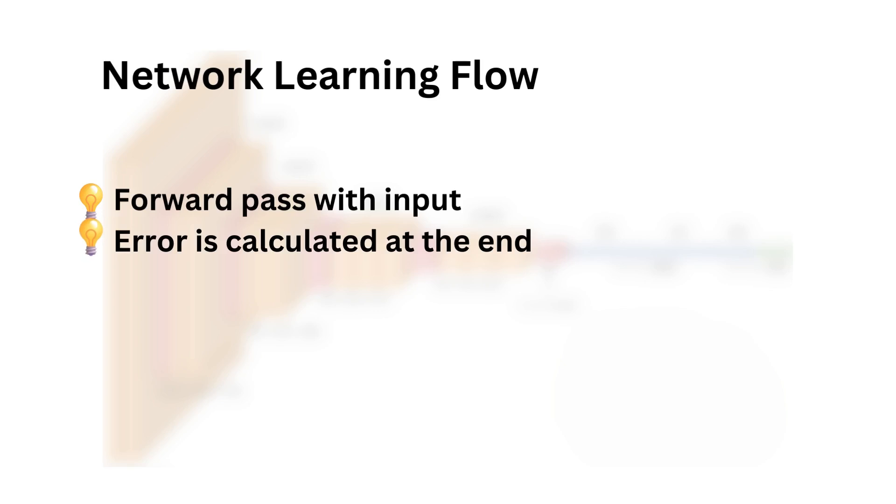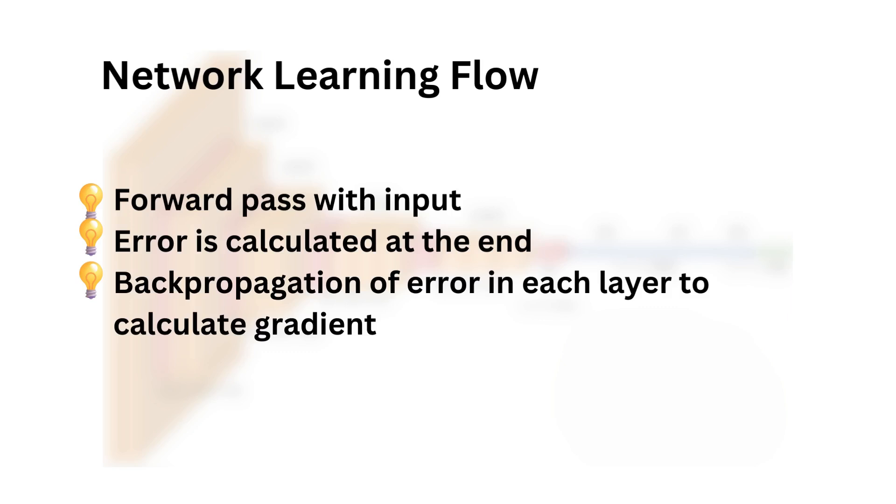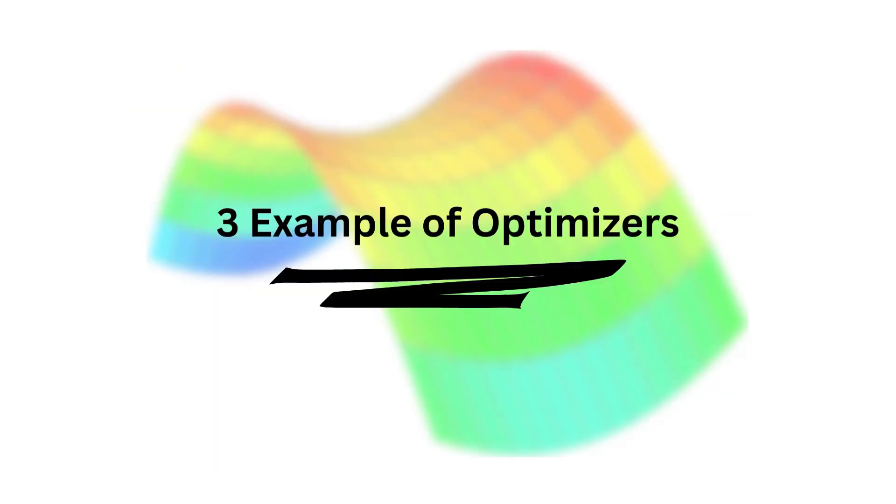Anyway, in a nutshell, the full deep learning flow is the following: forward pass of the input to generate an output, error is calculated on the output with the ground truth, backpropagation of error is enacted to get all the necessary gradients, and finally the optimizer uses these gradients to update the weights.